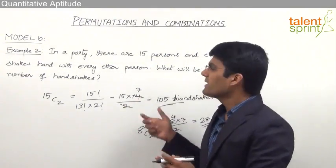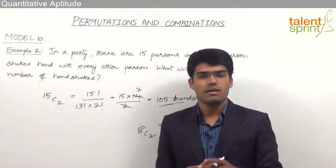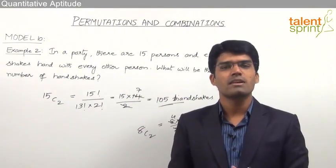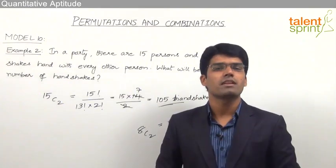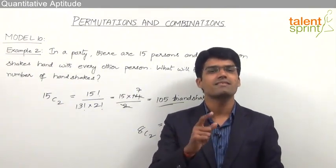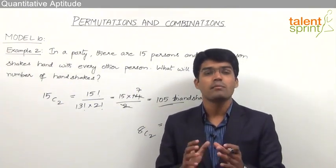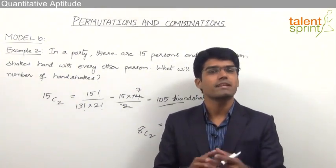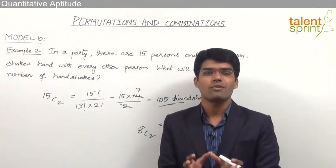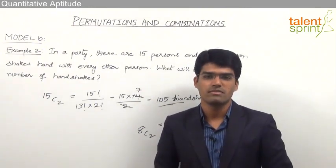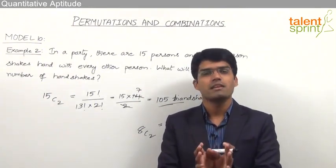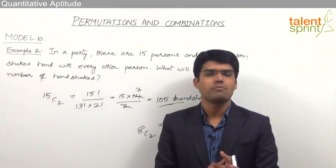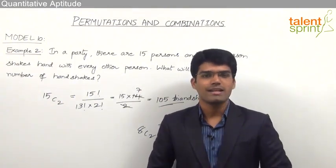These are cases indirectly based on combinations: the number of handshakes in a party is selection of 2 persons out of the given number, where every selection results in one handshake. Similarly, the number of matches played is selection of 2 teams out of the given number of teams. We simply decide whether the question is permutations or combinations and apply NCR accordingly.